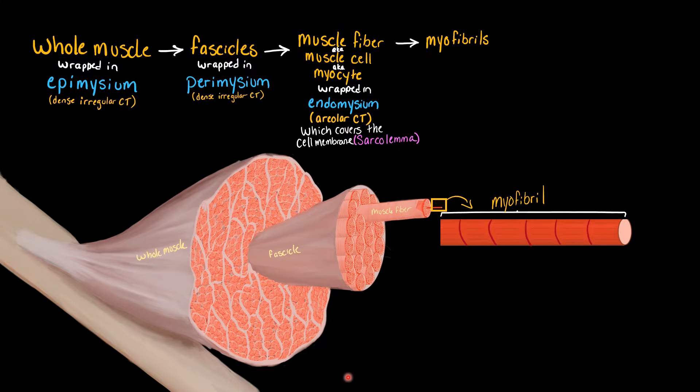Now, these myofibrils have many smaller individual units within them. Those individual units are called the sarcomeres. So you can kind of think of a myofibril like a train and the sarcomere like a train car, because all those sarcomeres lined up end to end is what makes the myofibril.